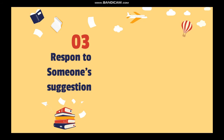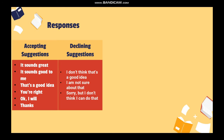Now let's come to the third section — it's about how to respond to someone's suggestion. There are two types: accepting suggestions, which means we want to do the suggestion, and declining suggestions, which means we don't want to do the suggestion.